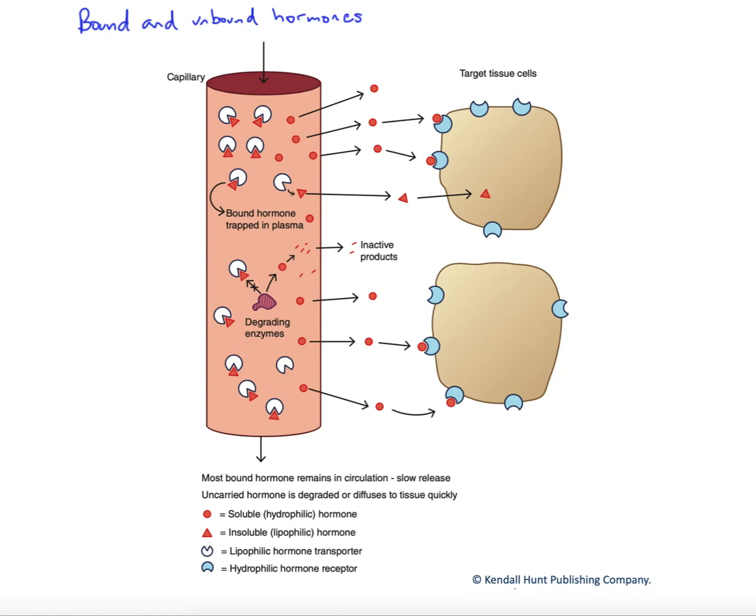In this figure, we're going to look at bound and unbound hormones, which refers to whether a hormone is bound to a protein carrier within the bloodstream. There are really two rationales for whether or not a hormone will be bound within the bloodstream.